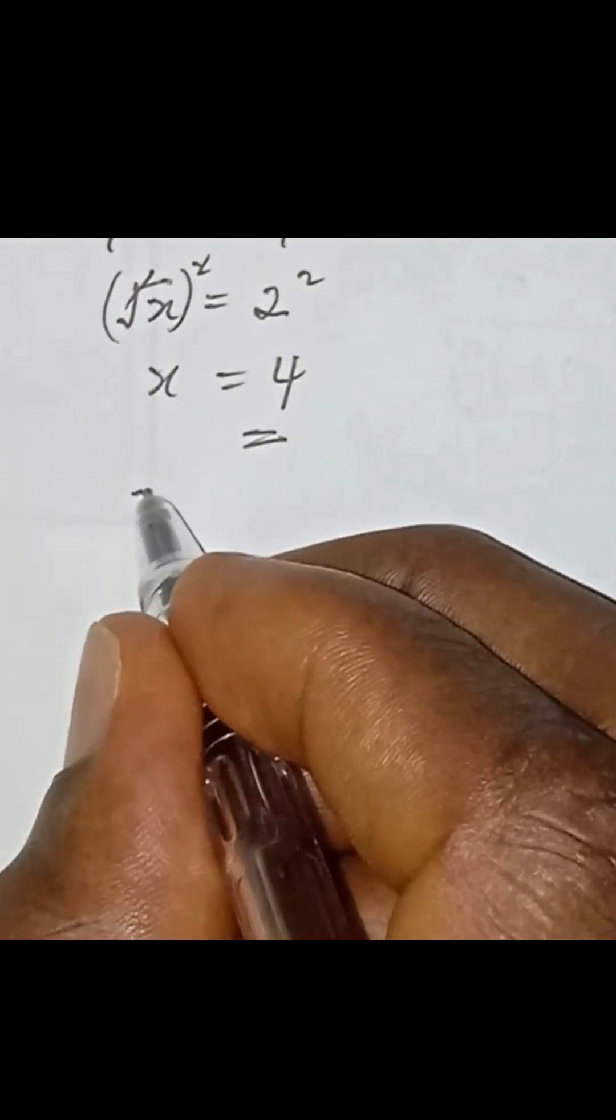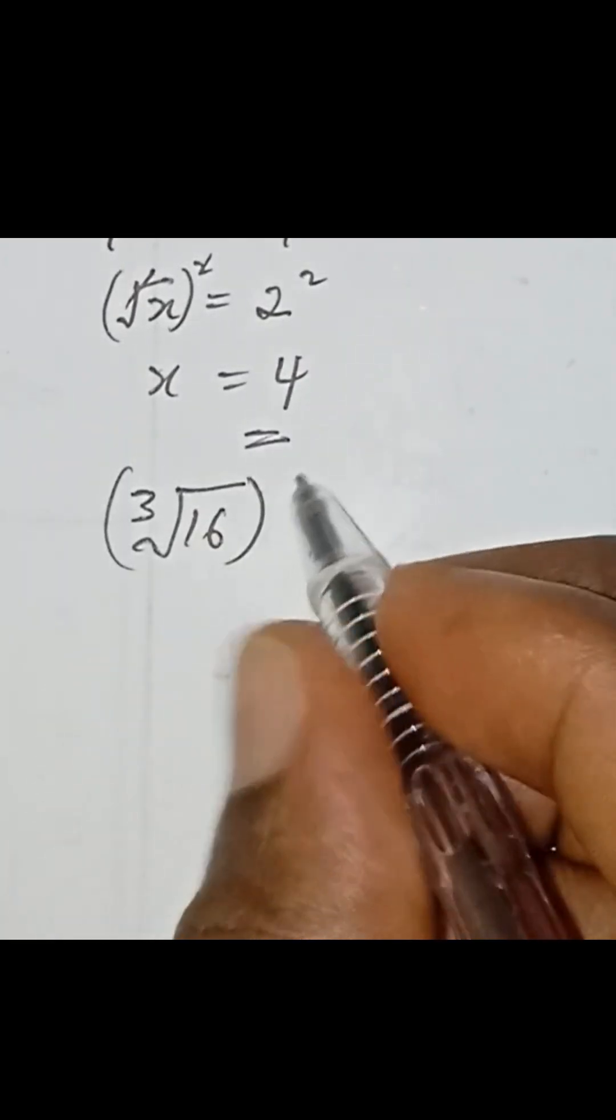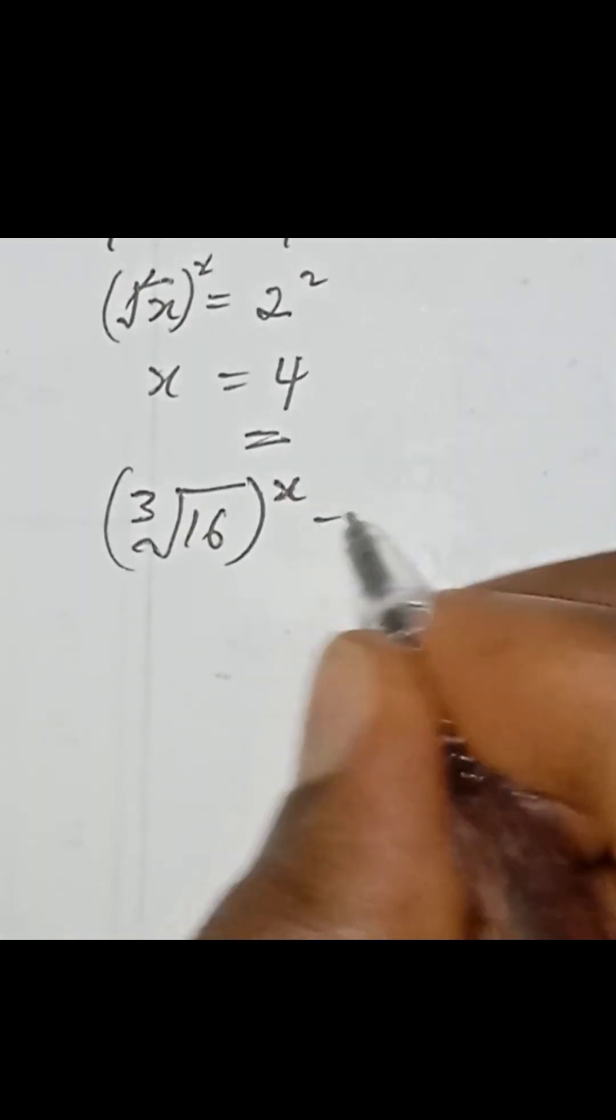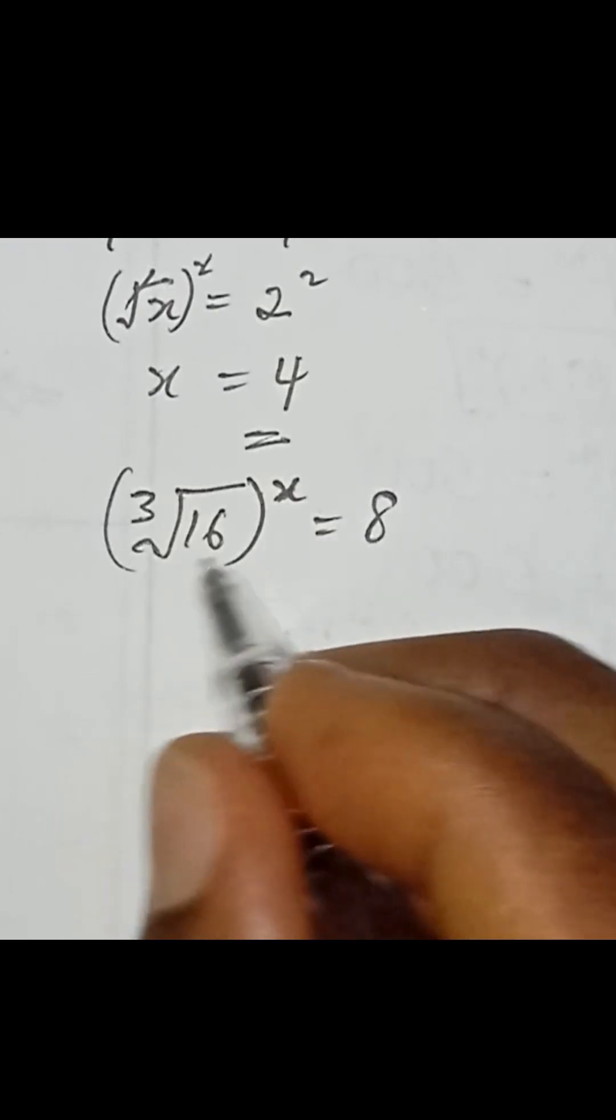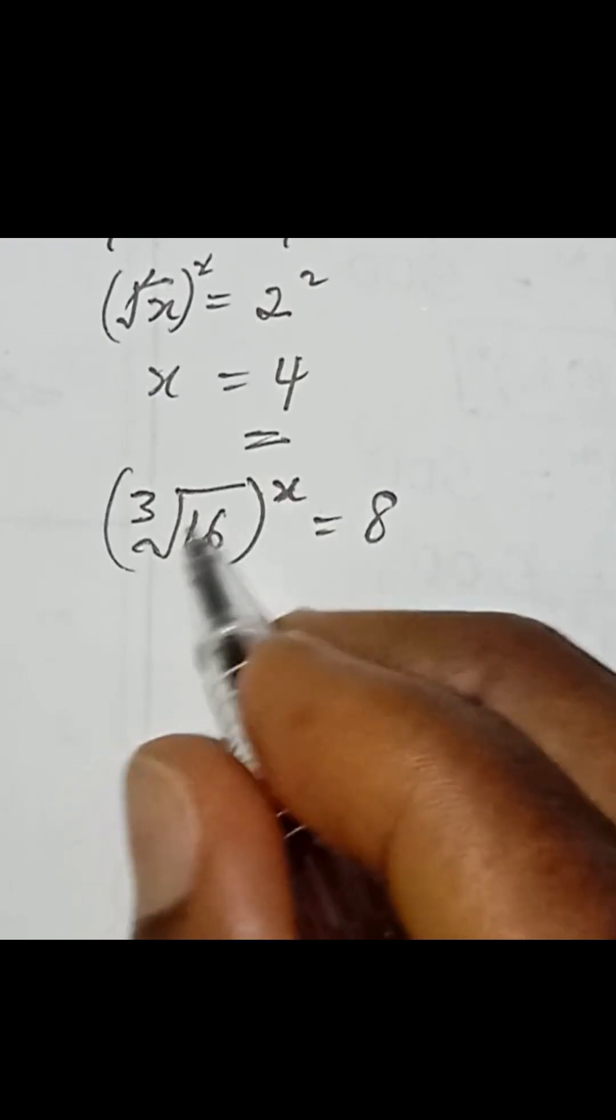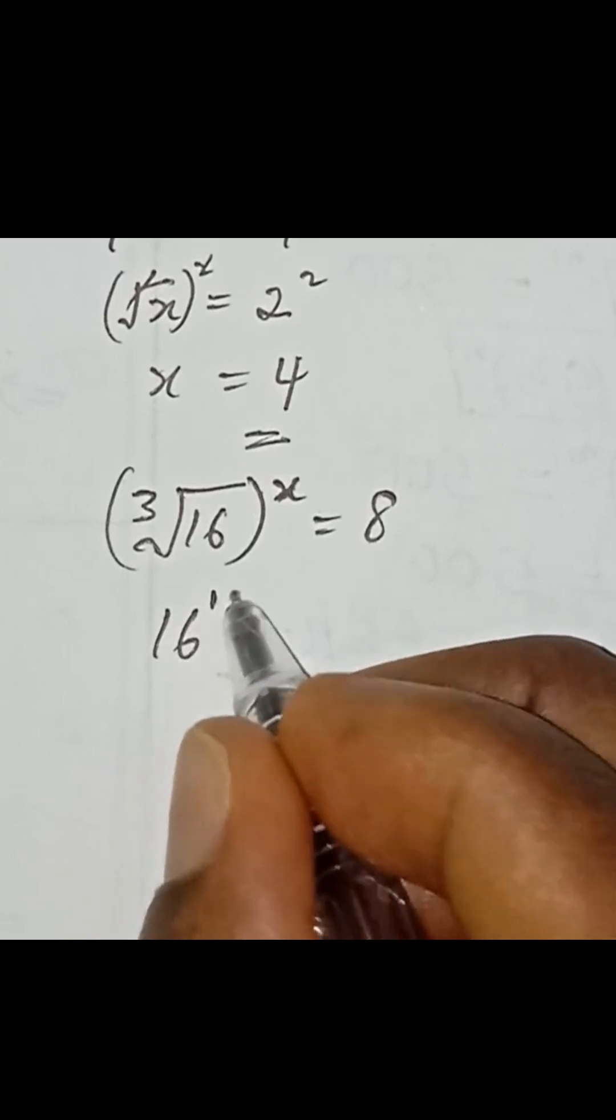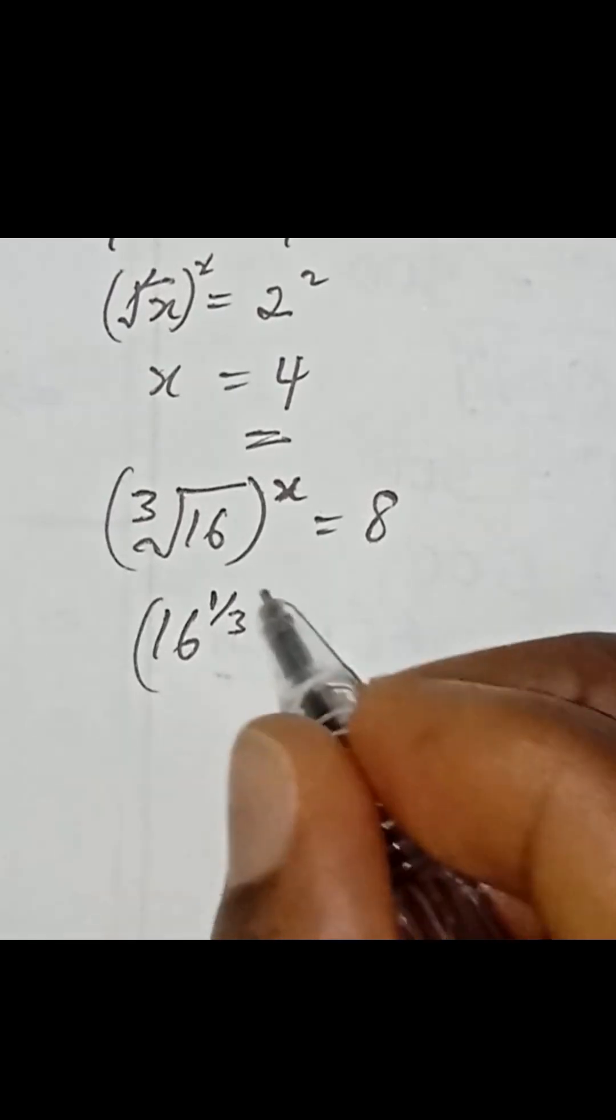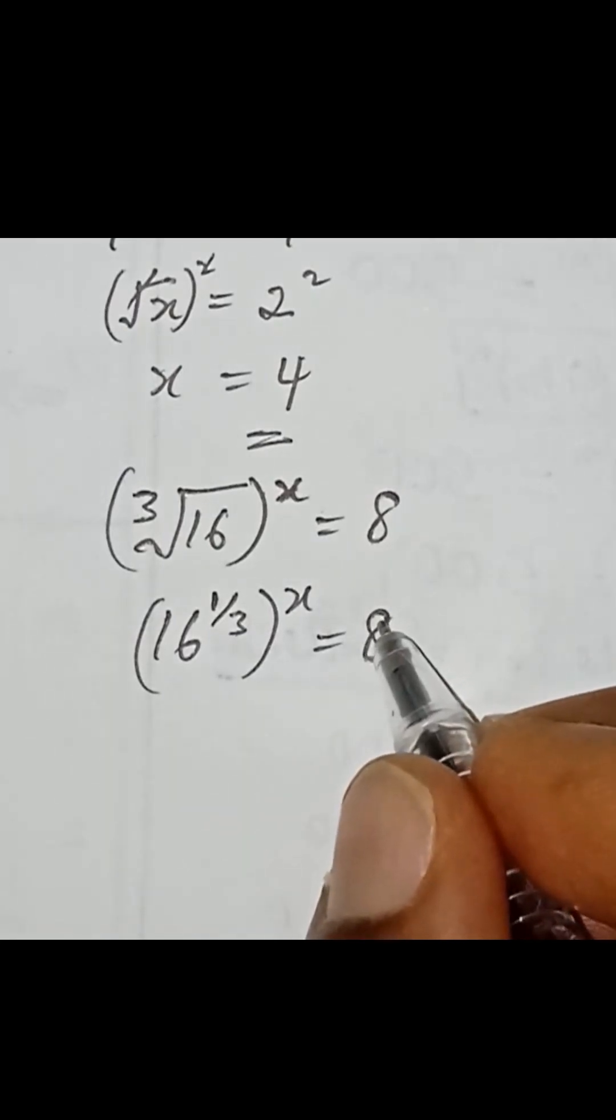So in another case where you have cube root of 16 in bracket to the power of x equal to 8, how do you solve for x? So the next thing here is to express this as 16 to the power of 1 over 3, then with the bracket multiply by x equal to 8.